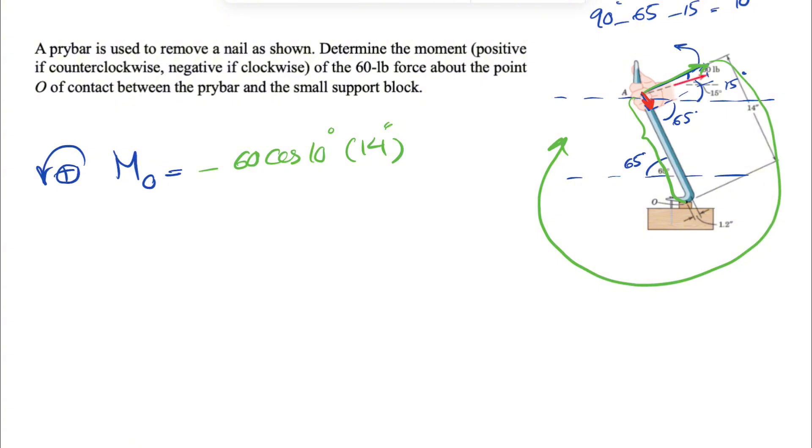as we can see, will be a little bit, we have a little distance, which is 1.2 inches. That's going to make this one also clockwise, so another negative sign. The force this time would be 60 sine of 10 degrees. And the distance would be this 1.2 inches that we have.